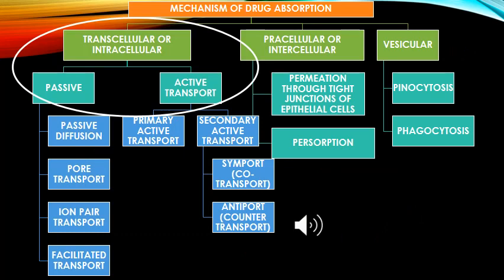The mechanism of drug absorption is categorized into three ways: transcellular, paracellular, and vesicular. Transcellular is also called intracellular. Paracellular is also called intercellular. Vesicular is also called corpuscular, where vesicles are formed.